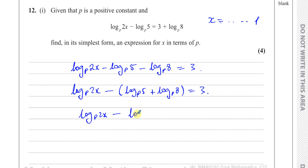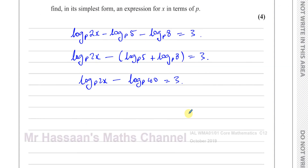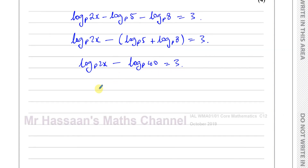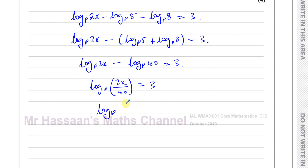So log base P of 5 plus log base P of 8 becomes log base P of 40. That equals 3. Now I can combine using the division law: log base P of 2x over 40, which simplifies to log base P of x over 20, equals 3.